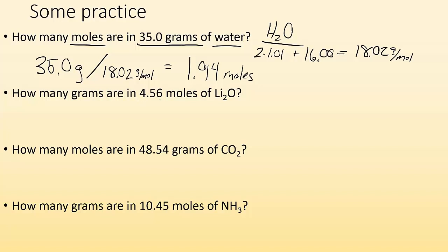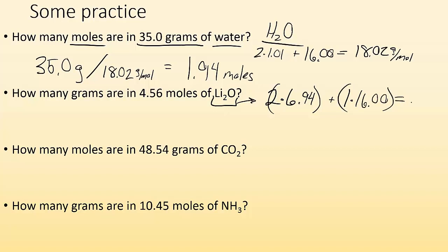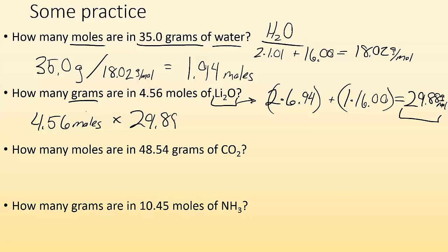How many grams are in 4.56 moles of Li2O? First, find the molar mass of Li2O: two lithiums at 6.94 g/mol each, plus one oxygen at 16.00, gives a molar mass of 29.88 grams per mole. Now I'm solving for grams: 4.56 moles times 29.88 grams per mole — moles cancel out — and my answer is 136 grams.